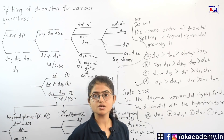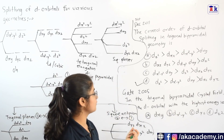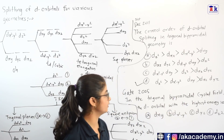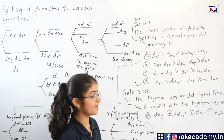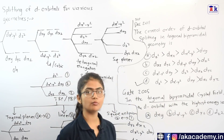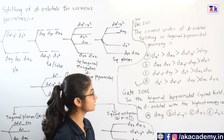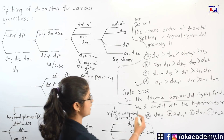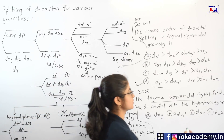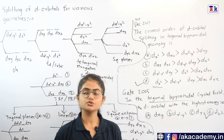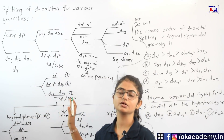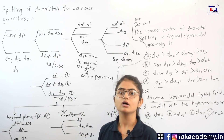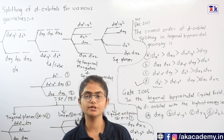A GATE 2005 question asks for the d orbital with the highest energy in trigonal bipyramidal crystal field. As just solved, DZ square has the highest energy, so option D is the answer. By remembering the d orbital splittings for various geometries using these tricks, one can easily solve such questions. That's all for this video.